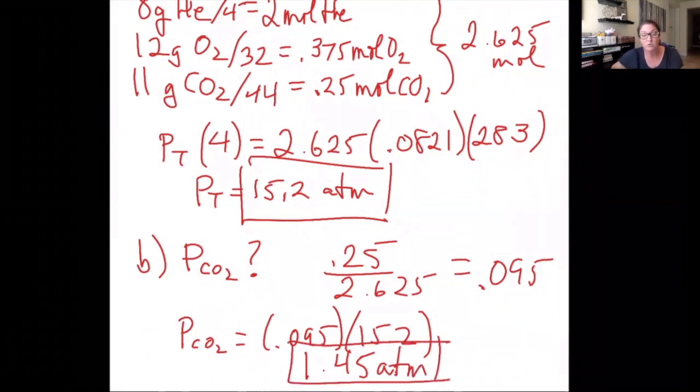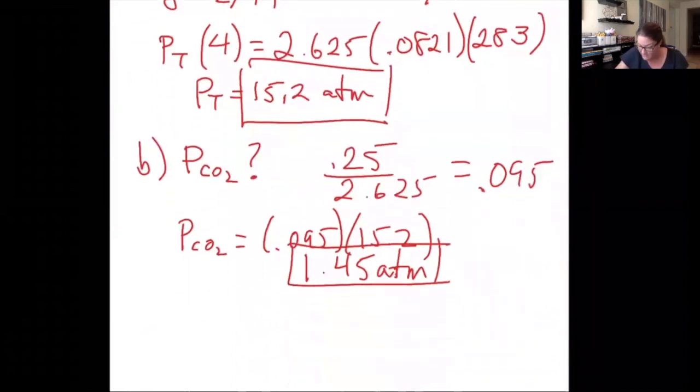There's another way I could have done it, which would have gotten me the same answer. And that is I could have used PV equals NRT. But if I wanted the partial pressure of just CO2, I could have plugged in just the moles of CO2 into PV equals NRT. And I would have gotten 1.45 ATM if I used 4 liters and 283 Kelvin.